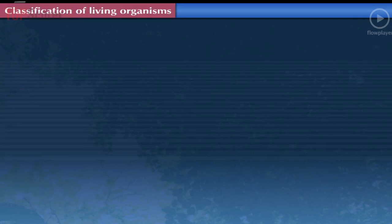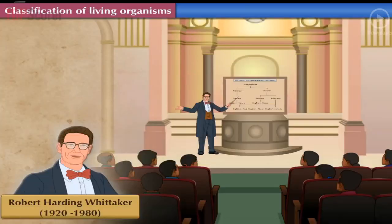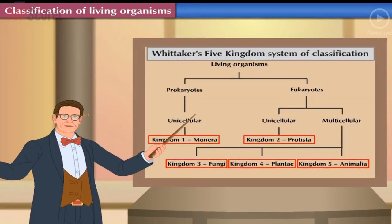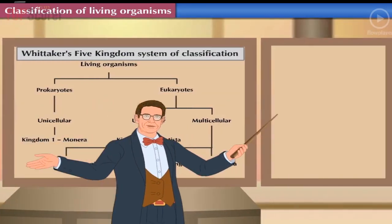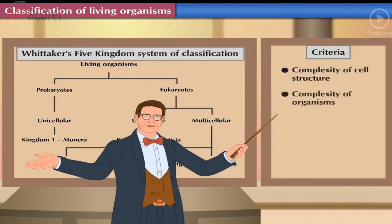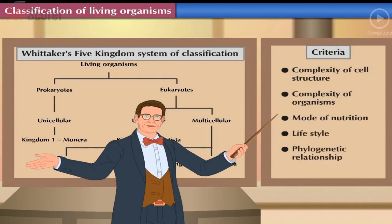Robert Harding Whittaker was an American ecologist. In 1969, he proposed a five kingdom system of classification for which he considered five criteria: complexity of cell structure, complexity of organisms, mode of nutrition, lifestyle, and phylogenetic relationship among them.